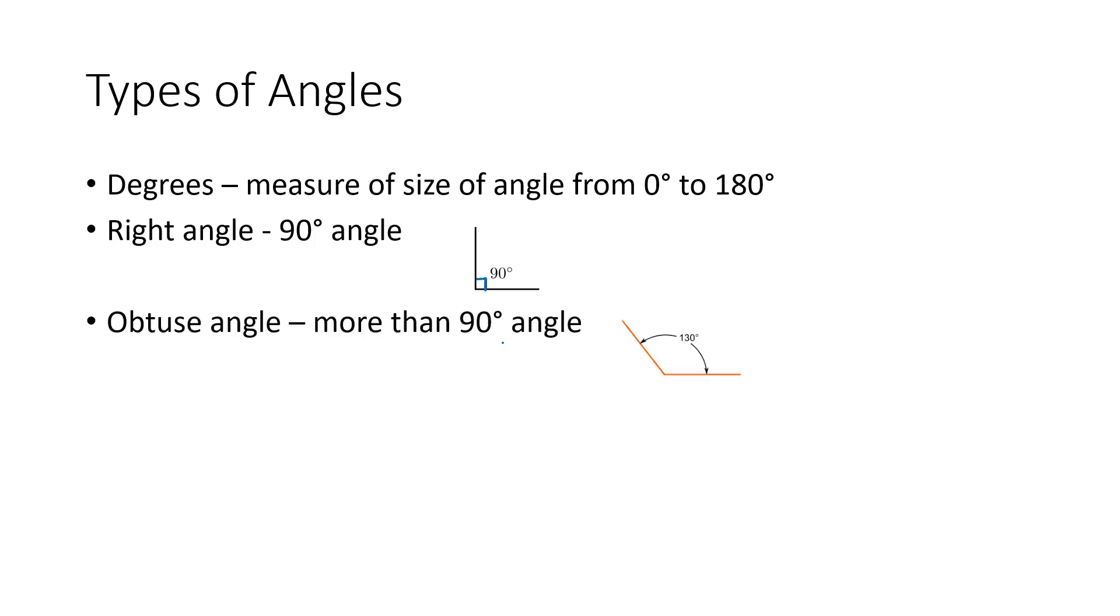If it's bigger than that 90 degree angle, we say it's quite obtuse. It is an obtuse angle, more than 90 degrees. So this example here is 130 degrees, wider than the 90 degree angle.